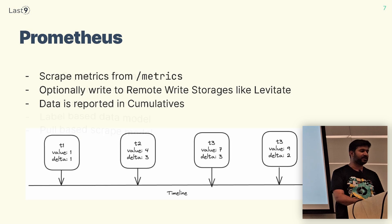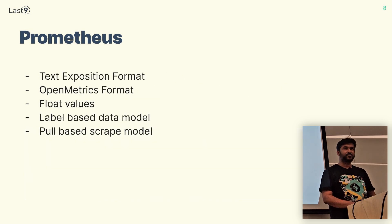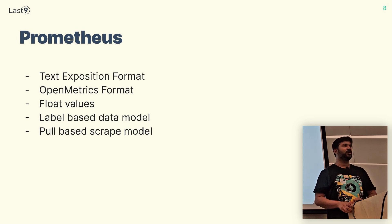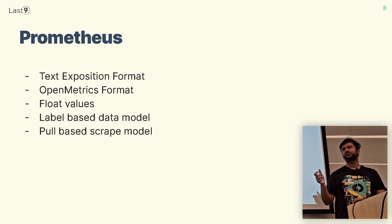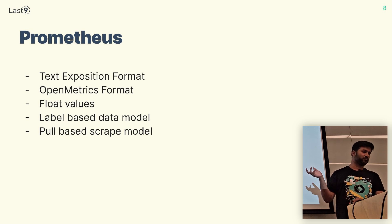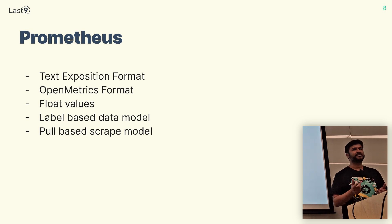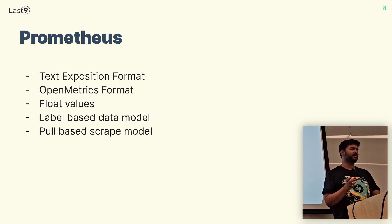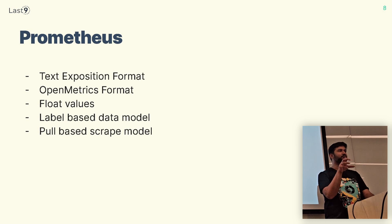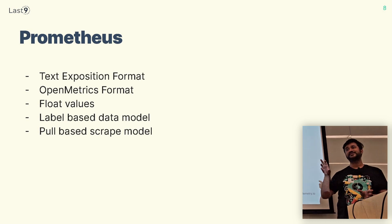Some interesting things about Prometheus: it uses a very simple text format. There is no binary protocol or protobuf needed to emit metrics — it's a simple text exposition format. There is also a newer standard called Open Metrics. The values are floats. It uses a simple but multidimensional label-based data model. And as we discussed, it works on a pull-based scrape model, whereas OpenTelemetry is different.